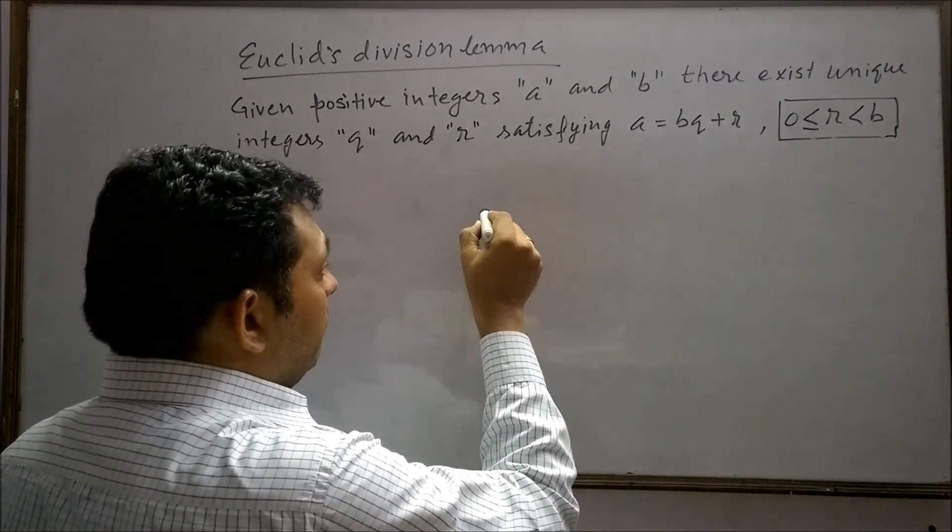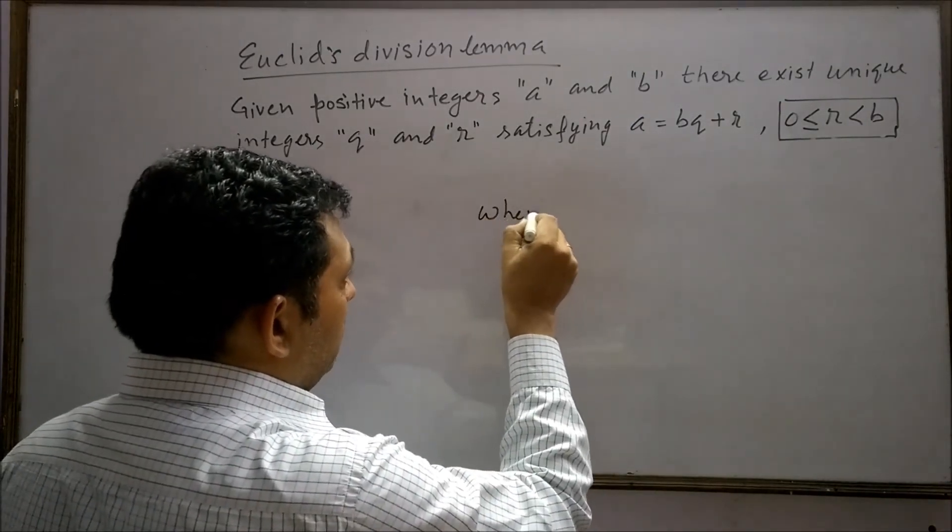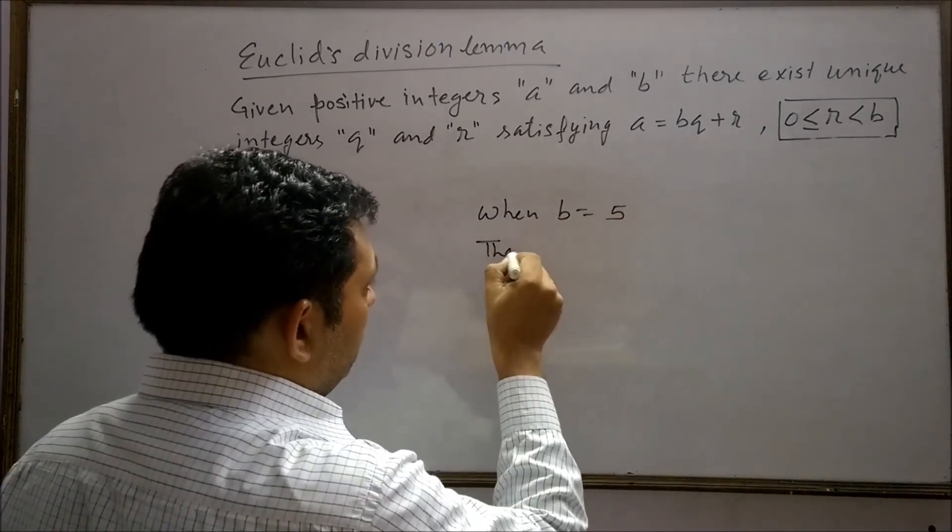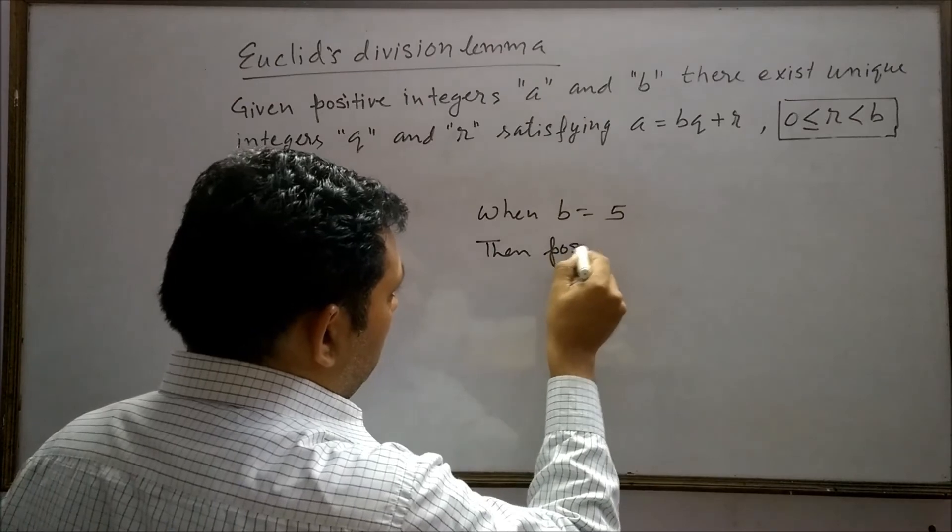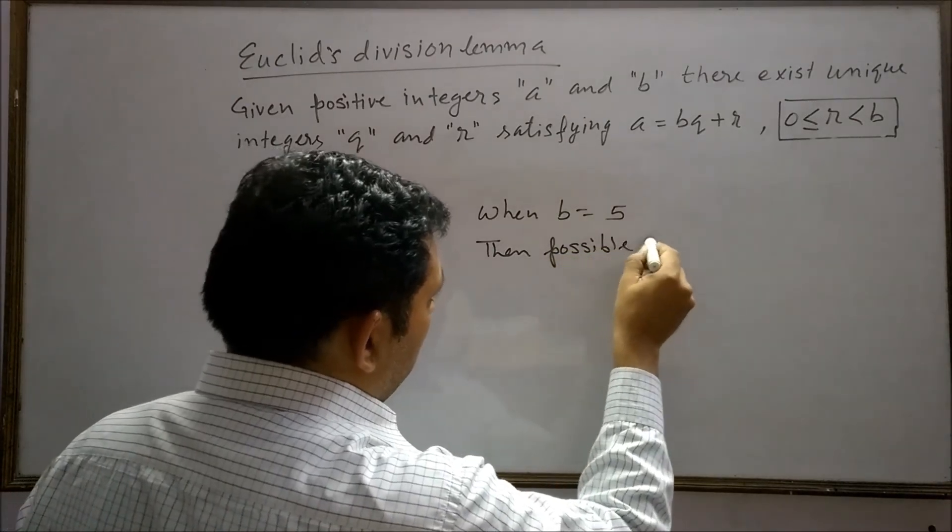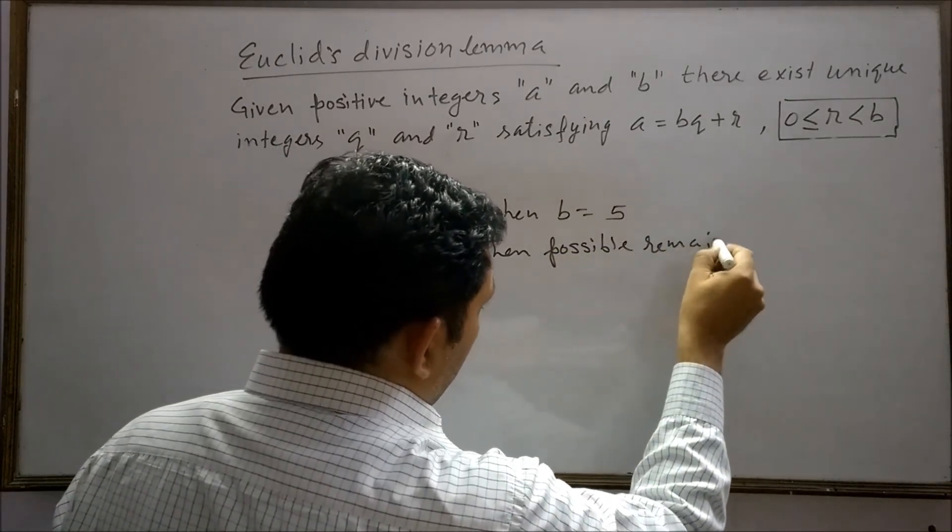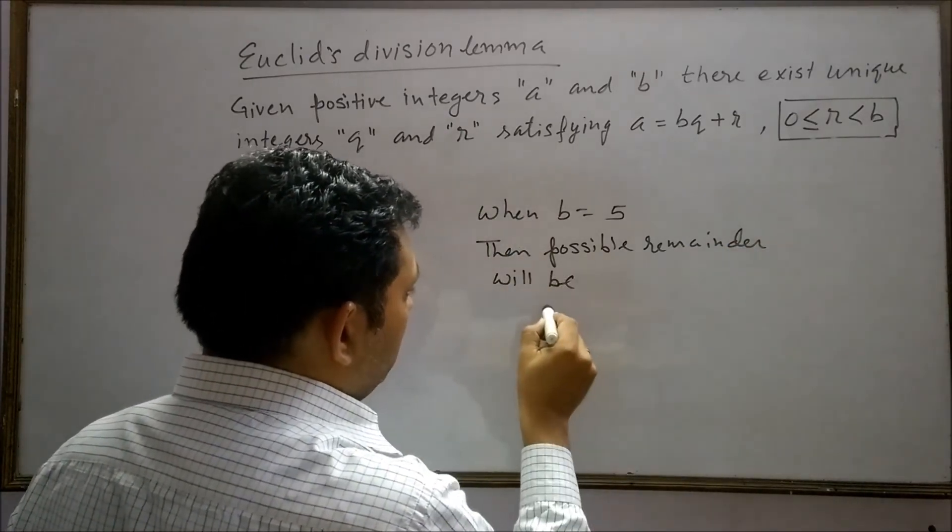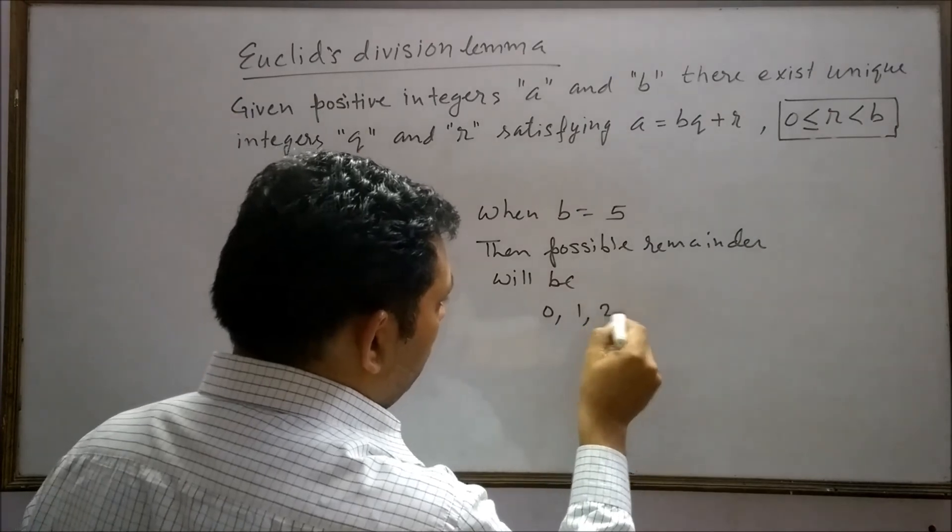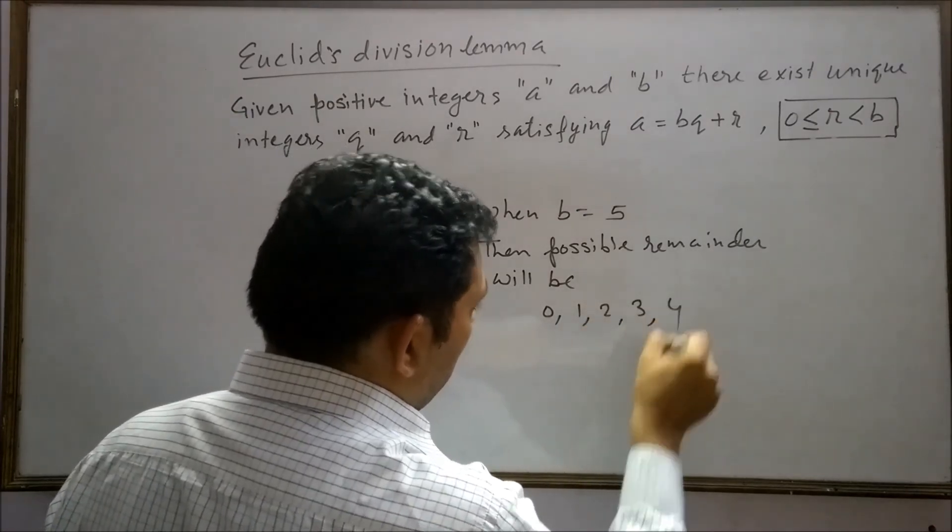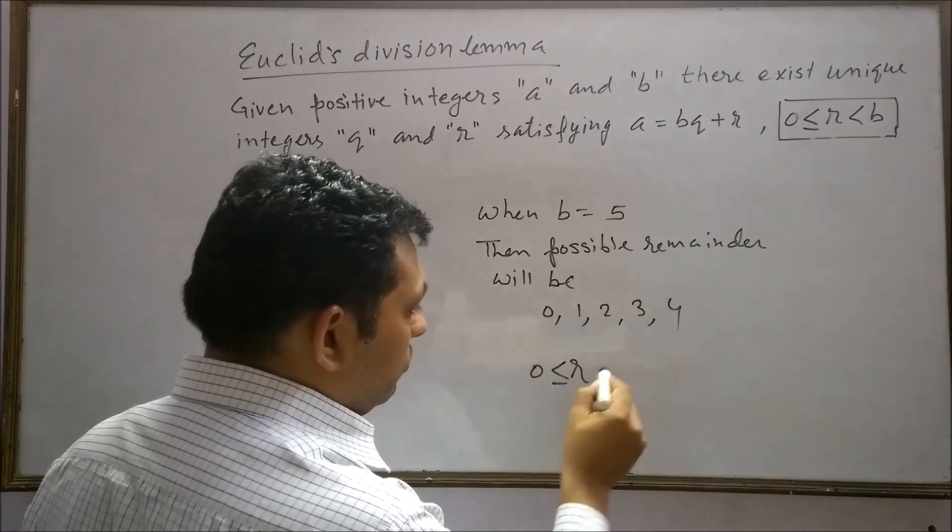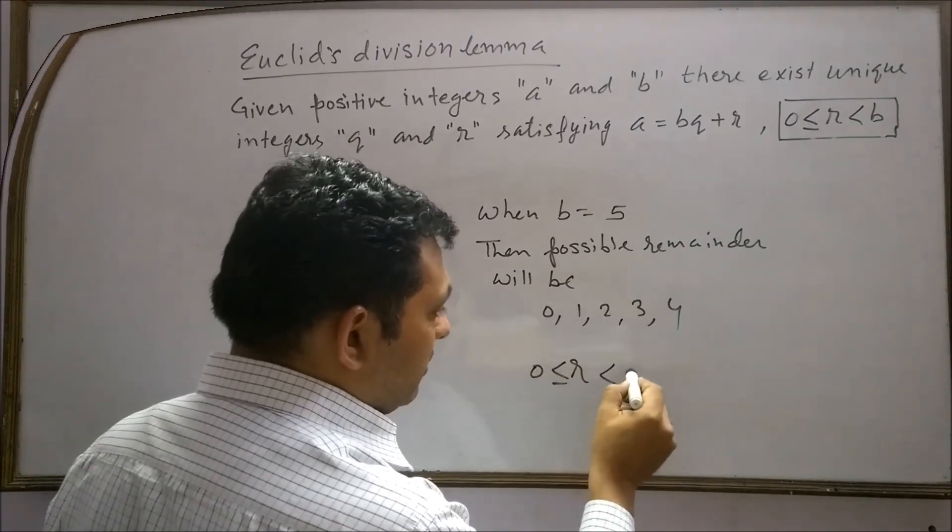It means when b equals 5, then possible remainders will be 0, 1, 2, 3 and 4. It means r will be equal to 0 or greater than 0 but less than 5.